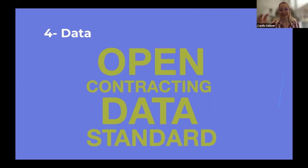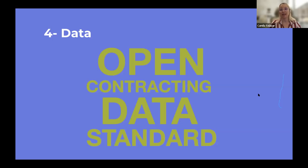A key ingredient is data. The most advanced tools of risk detection and analysis actually need machine-readable and potentially standardized data. We support a data standard at OCP called the Open Contracting Data Standard, or OCDS, which tells you how to structure and disclose procurement data in a standardized format so you can capture data about all different stages of the process. We currently have more than 30 publishers around the globe publishing OCDS data, including national systems and subnational or local level publications.